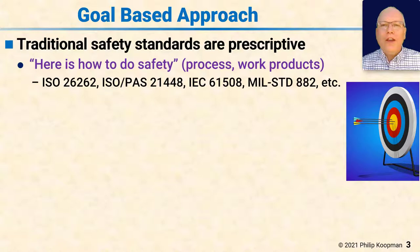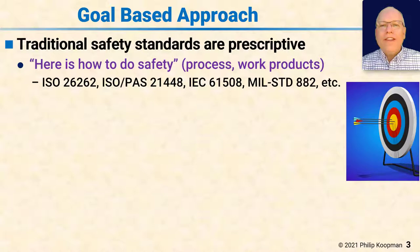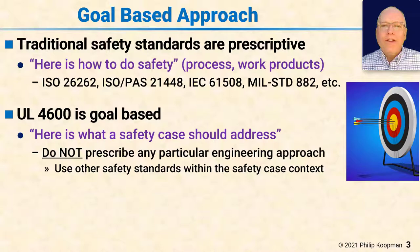4600 uses a goal-based approach to safety. Traditional safety standards, such as ISO 26262 and others, are more prescriptive — they tell you here's how to do safety, give you a process or process elements you're required to perform, and tell you which work products you're supposed to produce. Those standards are not displaced by 4600. 4600's approach is to add another layer of completeness, so it's goal-based: it says here's what a safety case should address, covering the types of activities you need to perform, without prescribing any particular engineering approach.